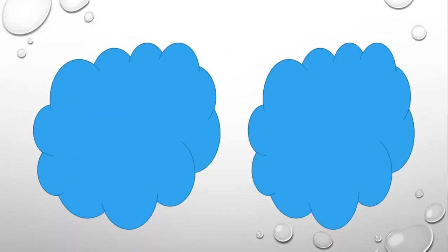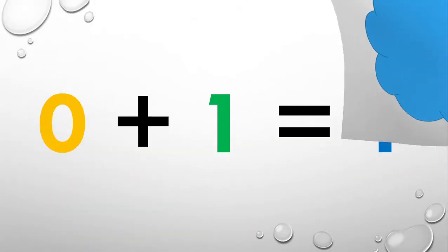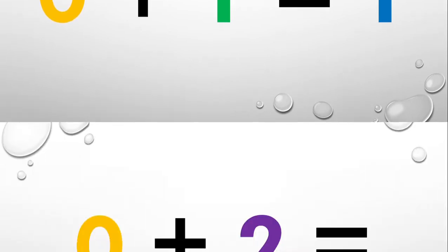What about zero plus one? There are zero stars in the first cloud and there is one star in the second cloud. Let's count all the stars in the clouds — one. So that means that zero plus one equals one.